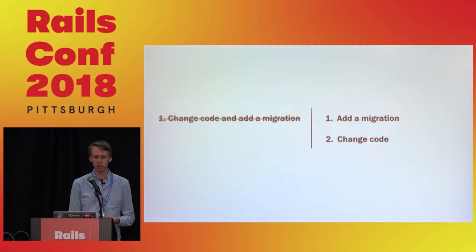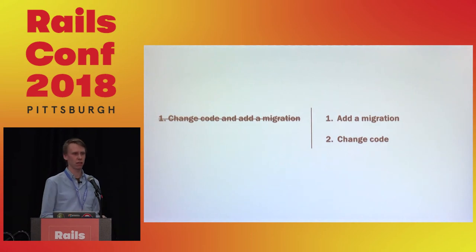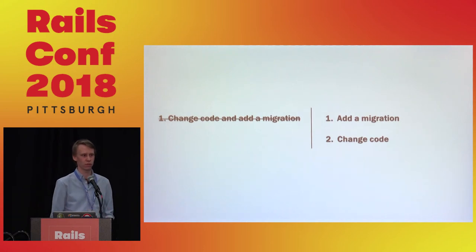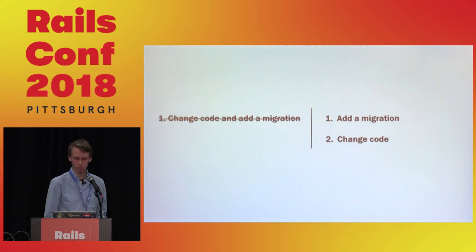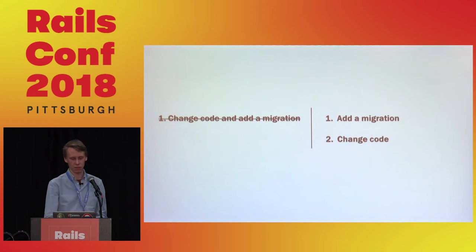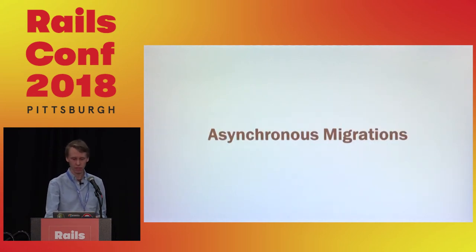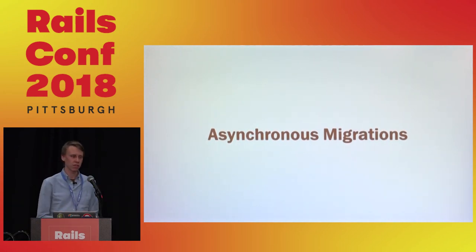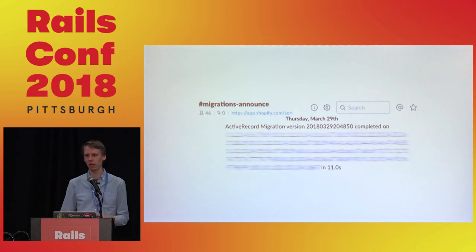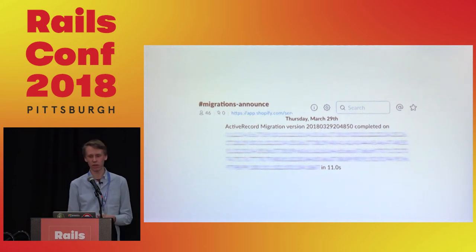So we try to avoid migrations as part of deploy and make developers write code that is compatible with both the old and the new schema. Because at the middle of a rollout, you'll always have some workers on the old revision and some on the new revision. We try to make migrations asynchronous, which helps establish a contract with developers that the code may run on both versions of the schema. Instead of changing code and applying the migration in the same step, the first step could be to add a migration — for instance, one that adds a column — and only then update the code to interact with the new column once you're sure all schemas have that new column.